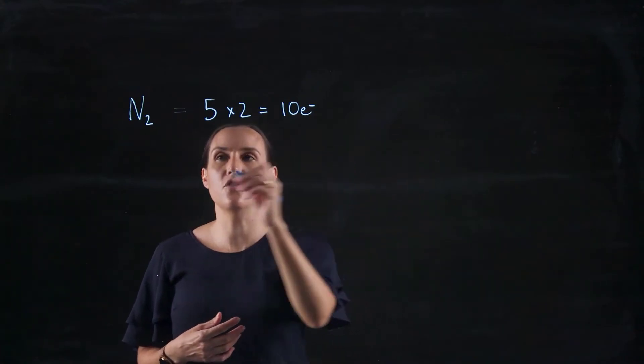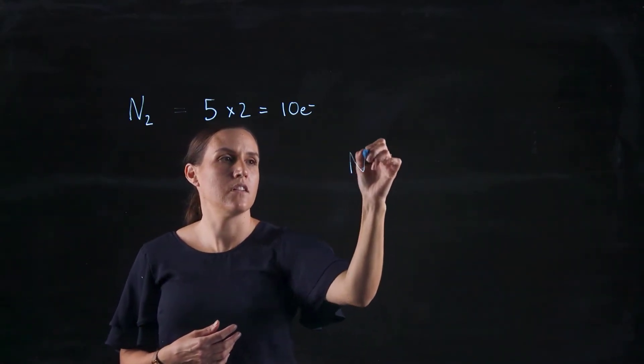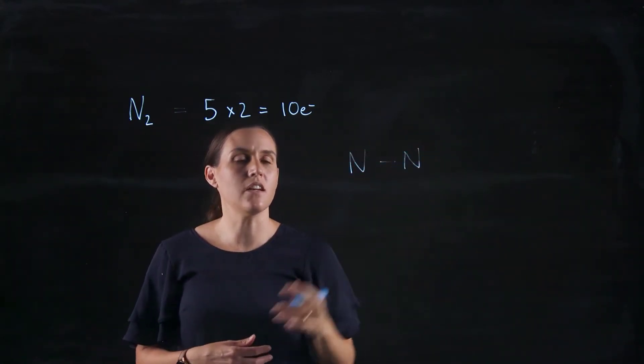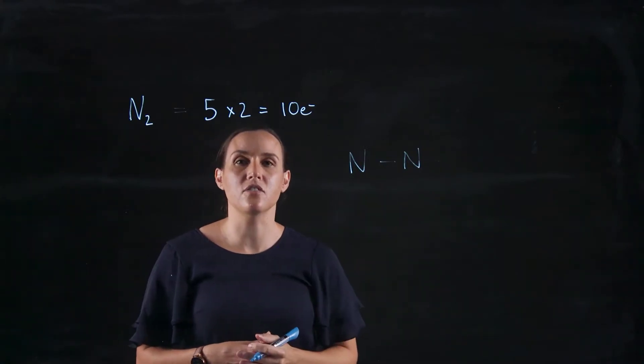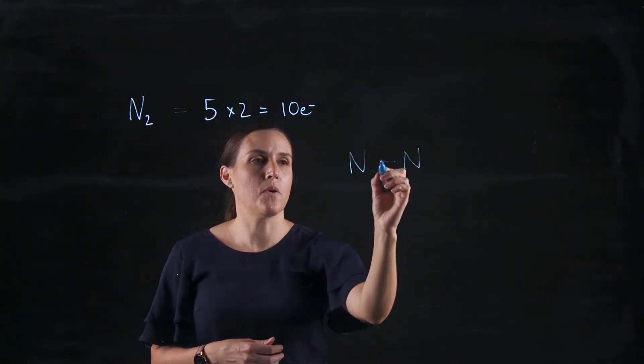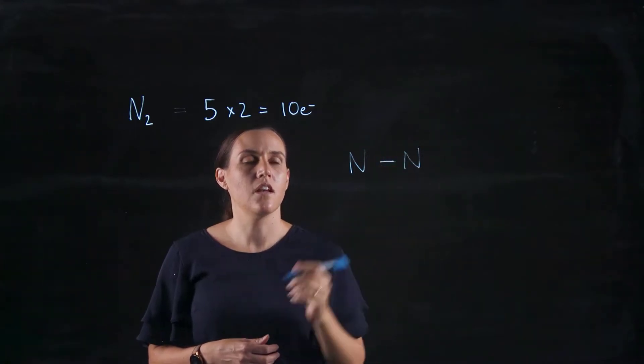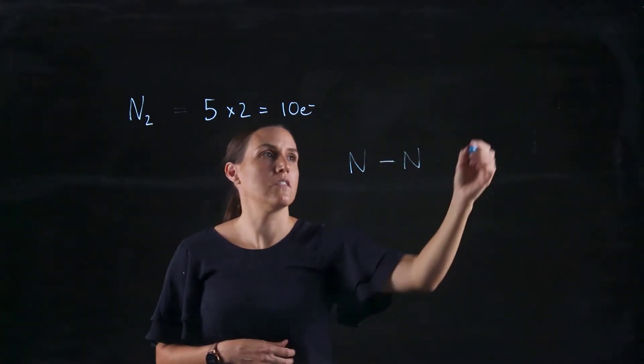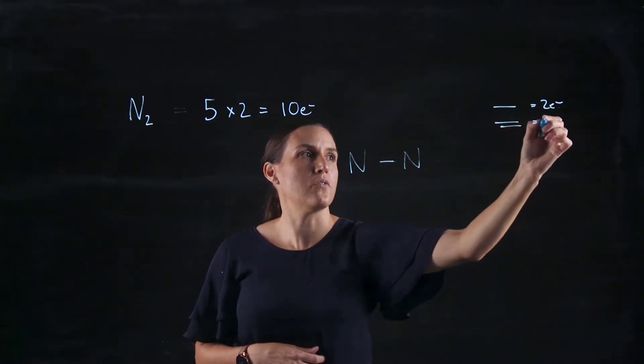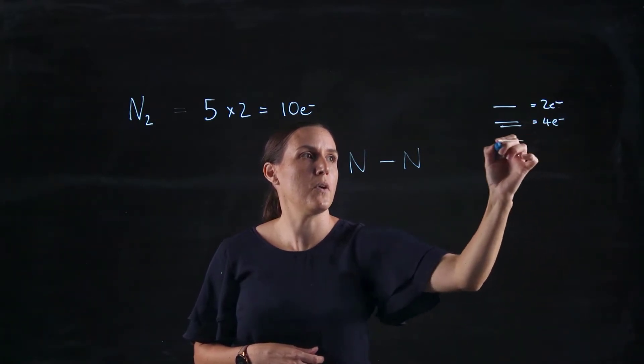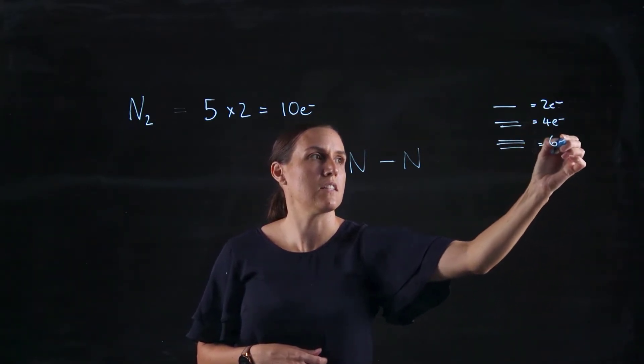So starting off with the two nitrogens, singly bonded to each other, and work out how many electrons are in that single bond. So remember, a single bond has two electrons, a double bond equals four electrons, and a triple bond equals six electrons.